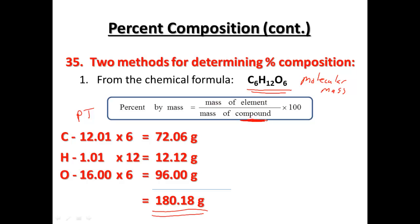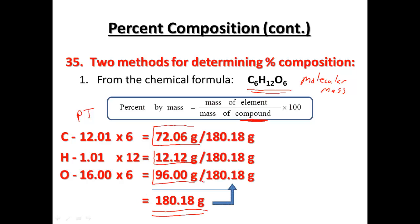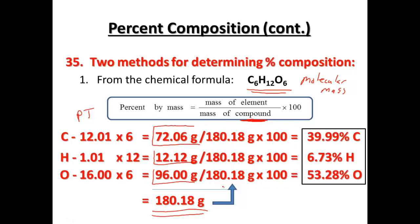Once we have the mass of the compound, we can use that to find the mass of each element — how much we got from carbon's mass, hydrogen's mass, and oxygen's mass. If we take each of those and divide them by the total mass of the compound, times 100 for our percent, we can find the approximate mass percentage of each element. So from C6H12O6, 39.9% would be carbon, 6.73% would be hydrogen, and 53.28% would be oxygen — that's percent by mass.